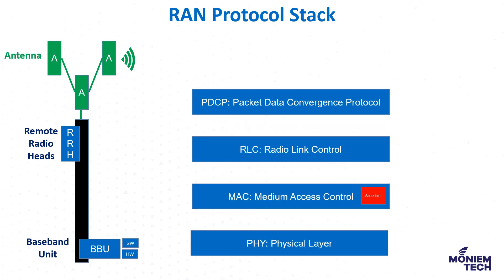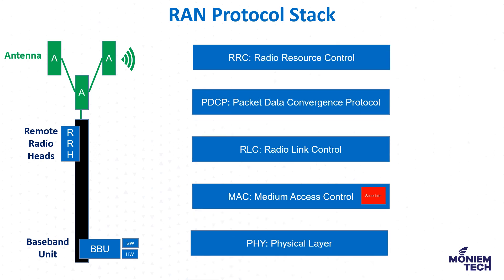The fourth one is PDCP, or Packet Data Convergence Protocol. It is responsible for compressing and decompressing IP headers, ciphering, integrity protection, and making early forwarding decisions — such as whether to send the packet down to the user equipment or forward it to another base station.